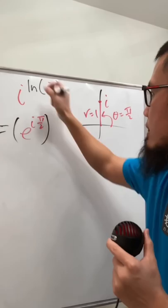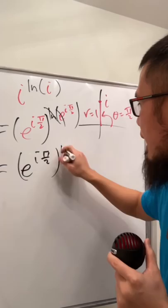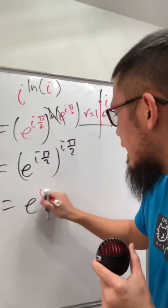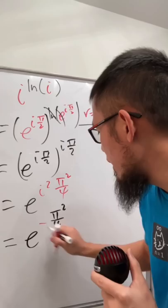Then we raise this to the i power, which is e^(iπ/2) raised to i. We can multiply the powers together: i times i is i², and π/2 times π/2 gives π²/4. Since i² equals negative one, we end up with e^(−π²/4).